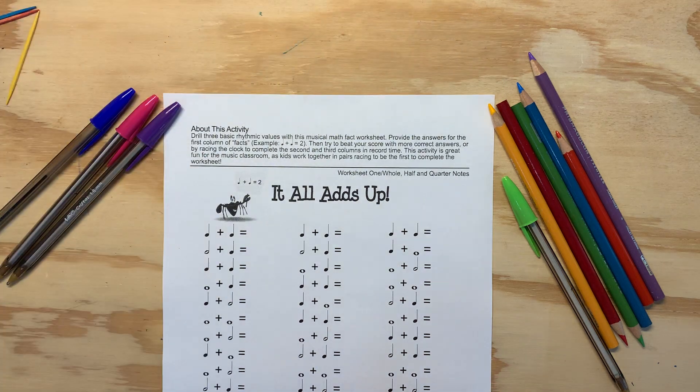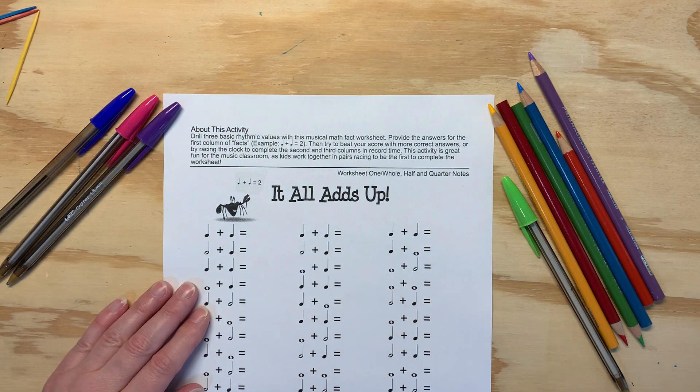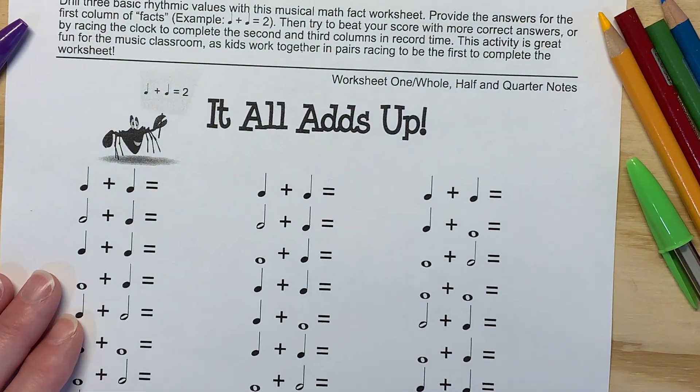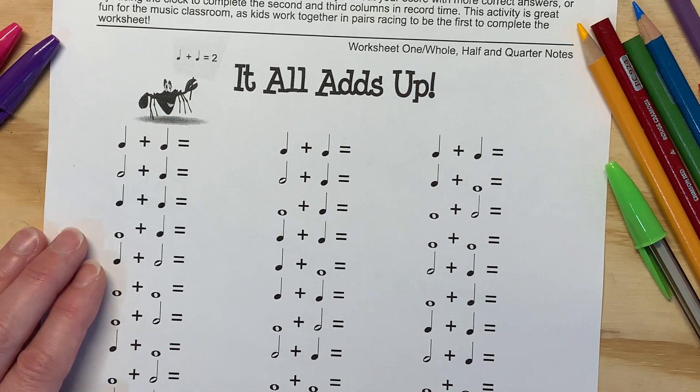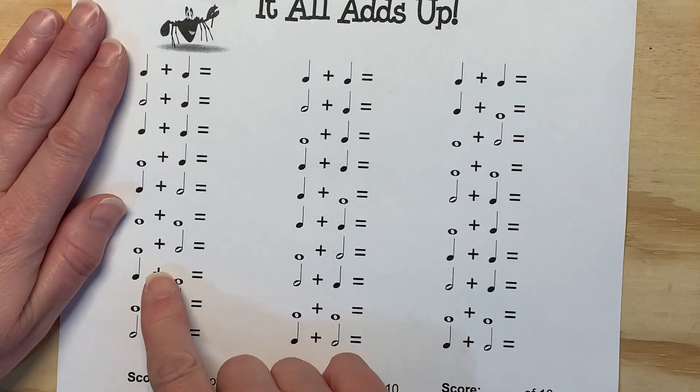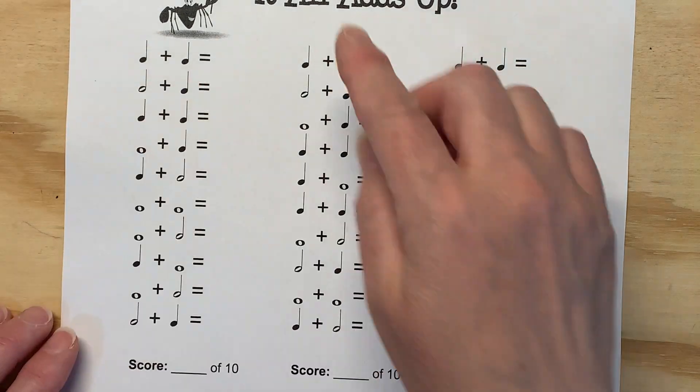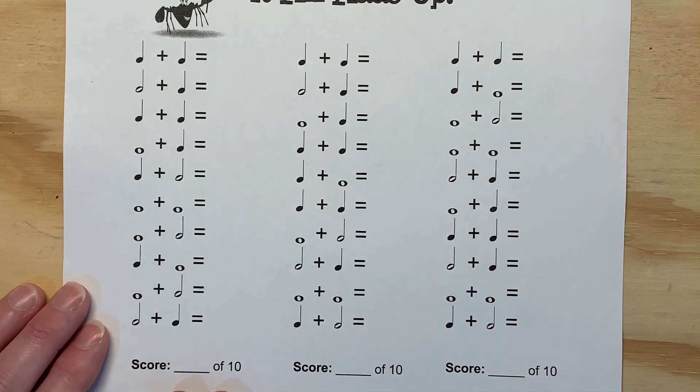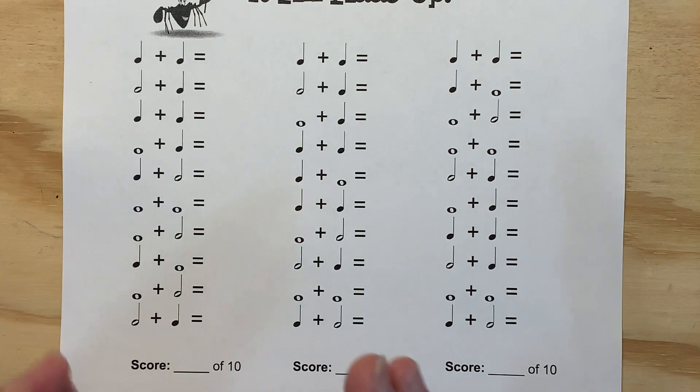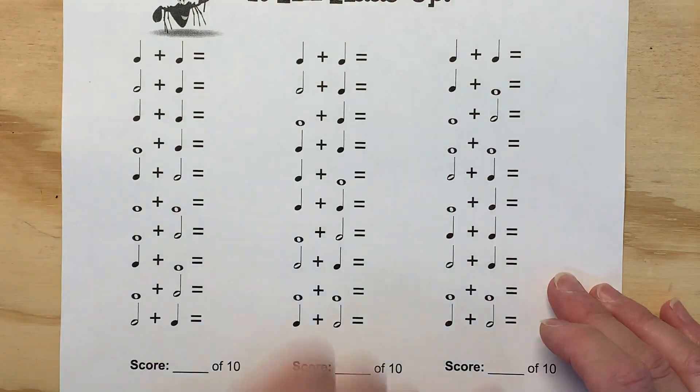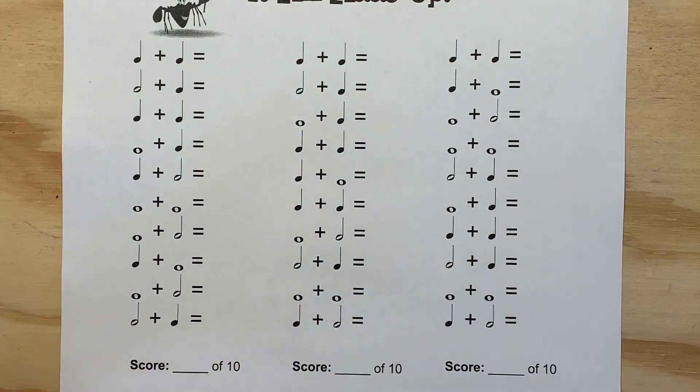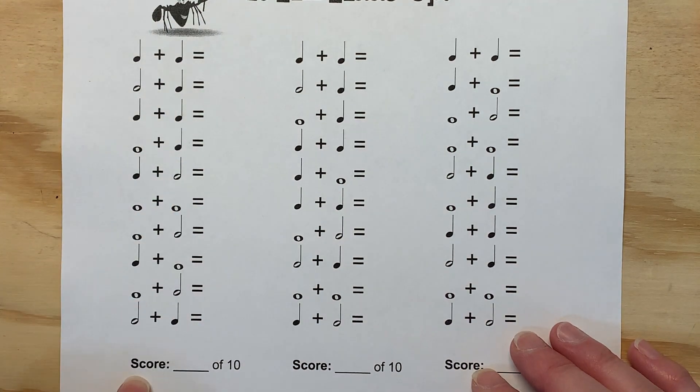All right, so when we are using the rhythm notes, what we're going to do is go down the first column. You're going to go down this first column and make sure you get them right. You can time yourself and see if you can go faster. It's always better to be right than be fast, but you want to be able to do both. So stop the video, go through and do column one.